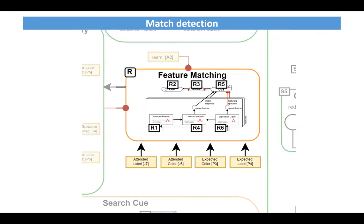We also have match detection. This subnetwork compares in parallel the expected features from memory with the currently attended features — is it red, is this a paprika? A match detection node checks if the attended and expected features overlap. If all features overlap, the condition of satisfaction gets activated, signaling that the currently attended location contains an object matching what we are looking for. A neural timer node will eventually get activated if the condition of satisfaction doesn't get activated, inducing a cycle of inhibition and boosting of the attention field.